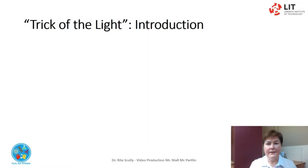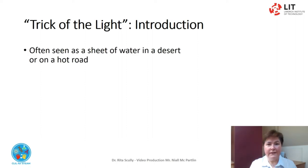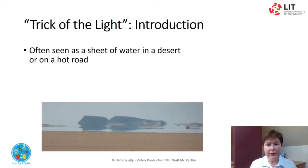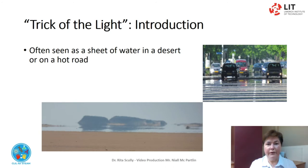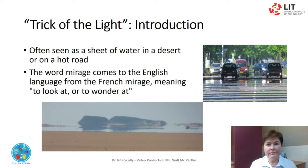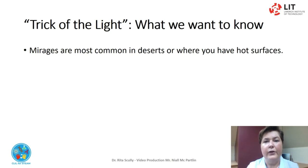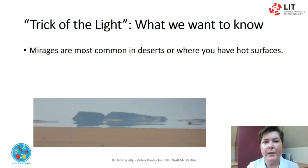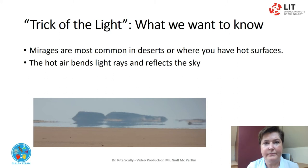Mirages are an example of a trick of the light. They are often seen as a sheet of water on the desert or on a hot road surface. They are caused by the refraction of light from the sky by the heated air. The word mirage comes to the English language from the French 'mirage', meaning 'to look at' or 'to wonder at'. Mirages are most common in deserts or where you have hot surfaces.